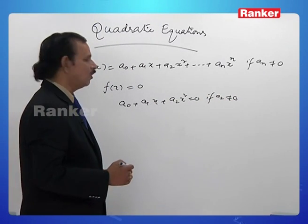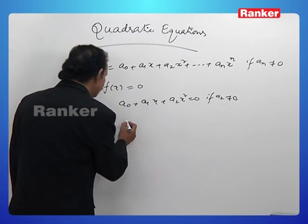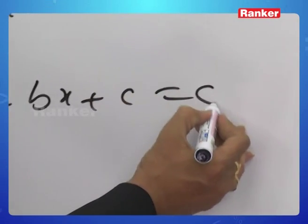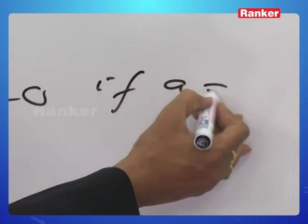And more generally, this form could be taken as ax² plus bx plus c equal to 0, if a is not equal to 0.